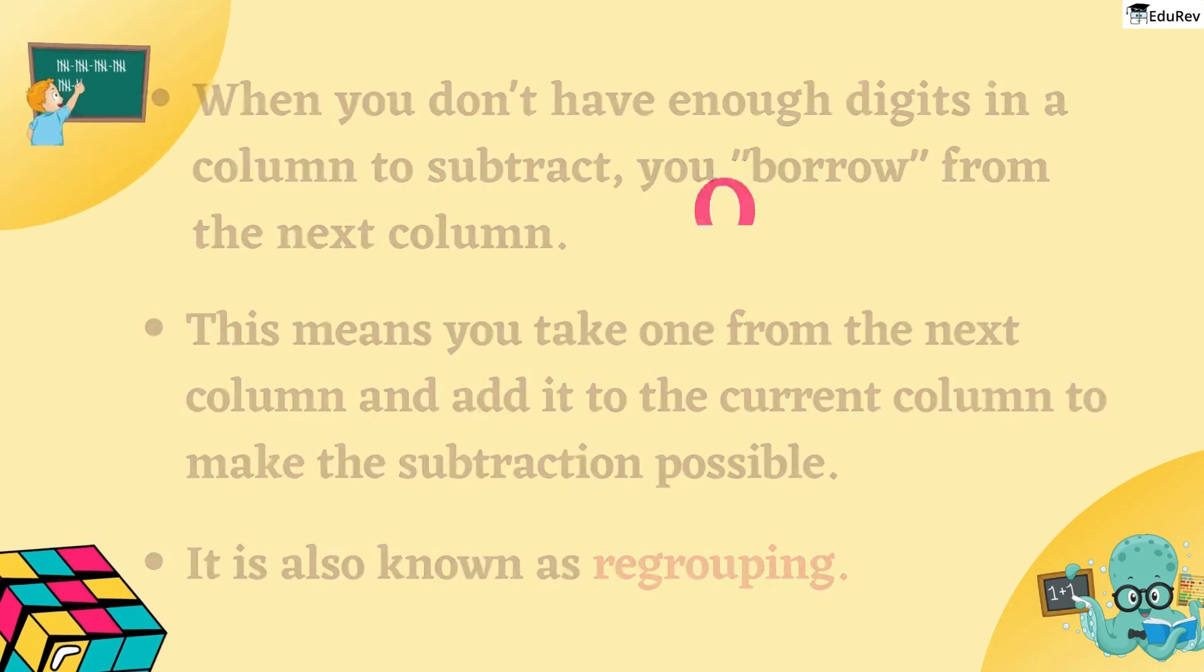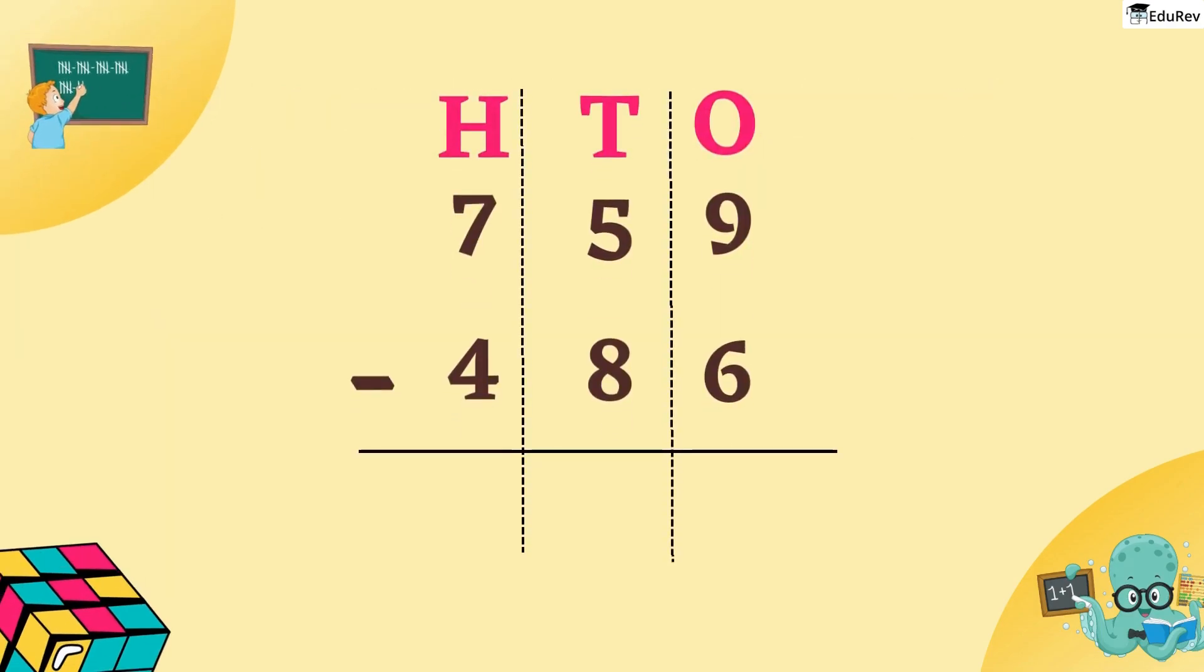Students, look at this. 759 minus 486. We have 9 minus 6 in 1s place which is equal to 3. In the 10s place, we have 5 minus 8. 5 is smaller than 8. So, it is not possible to take away 8 from 5. So, we will have to borrow from the 100s place.